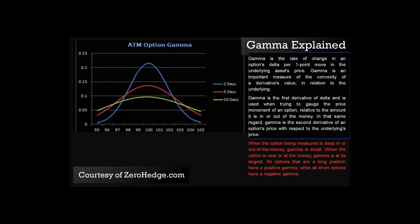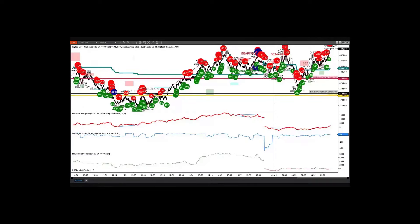Gamma is the rate of change in an option's delta per point move. What is important to understand is that the more gamma the option has is when the dealer is going to have to hedge the most — they're going to have to add to their initial hedges. What I'm going to show you right here is one of my charts with an indicator from ZoneTrader Pro.